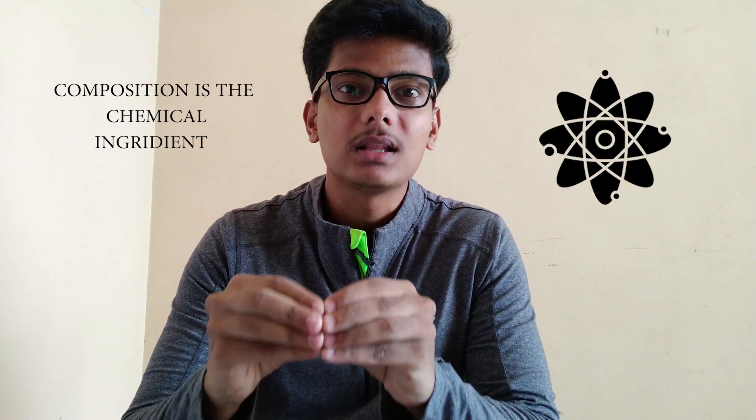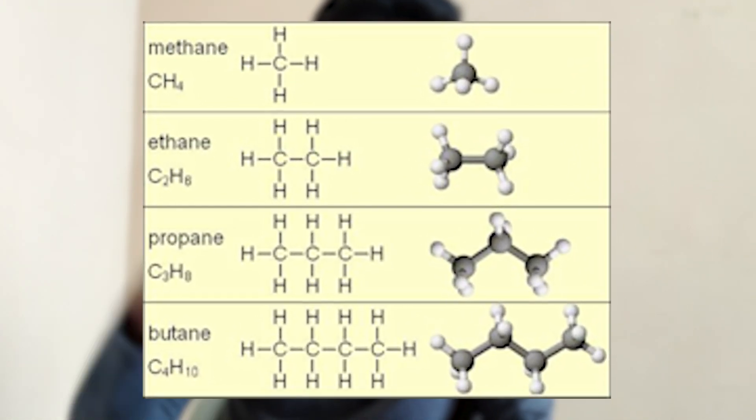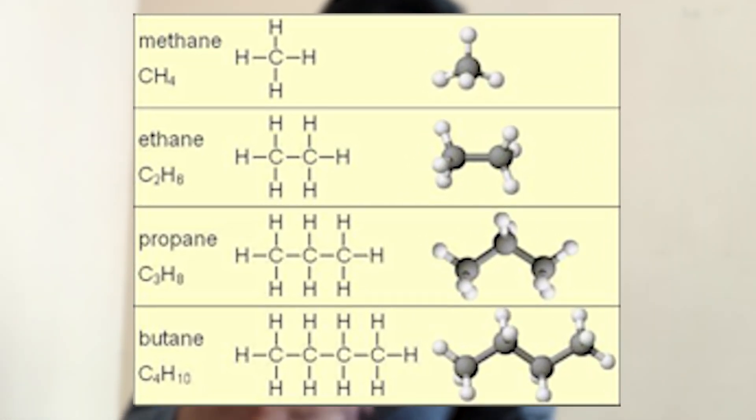First point, let's look at the composition. If you take petrol and diesel, both are basically made of hydrocarbon molecules. What is a hydrocarbon? It is formed by carbon and hydrogen bonds. Different varieties of molecules are formed based on the number of carbon atoms and hydrogen atoms — these are called hydrocarbons.